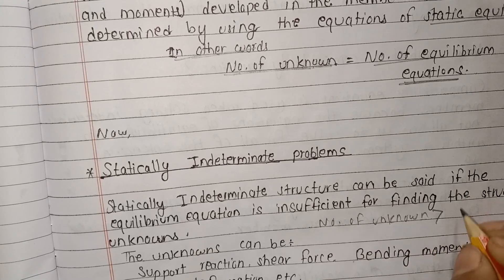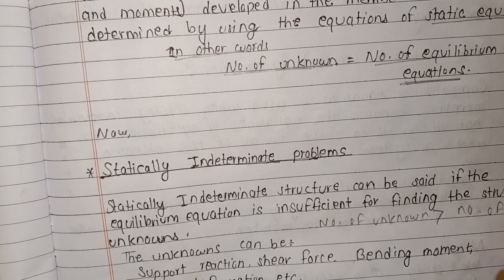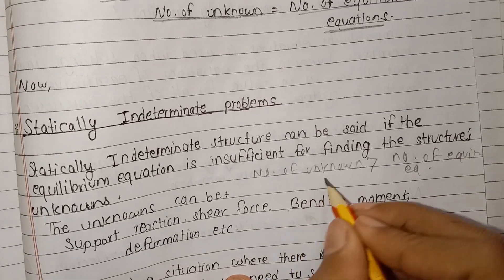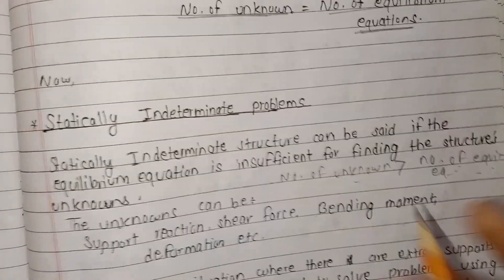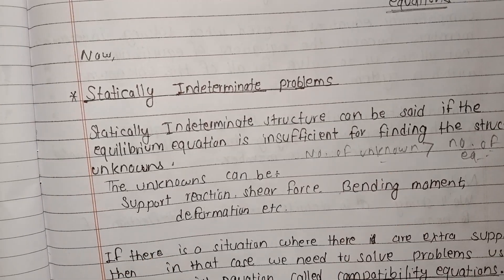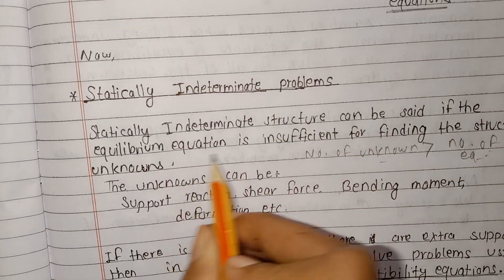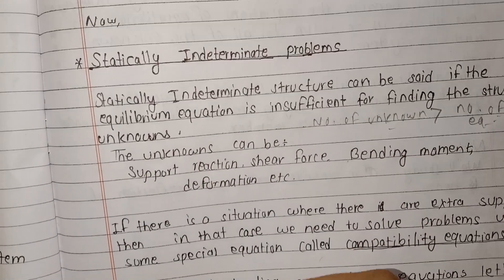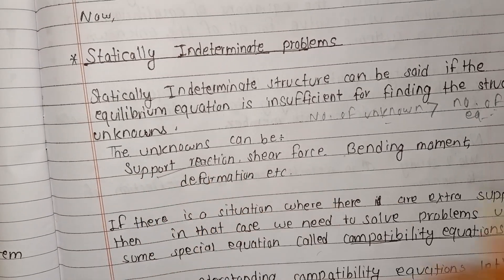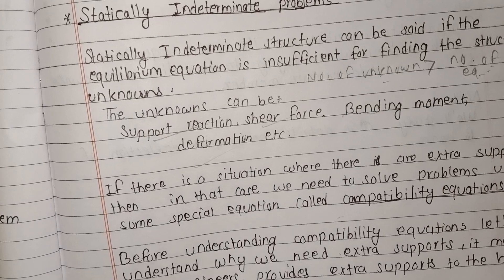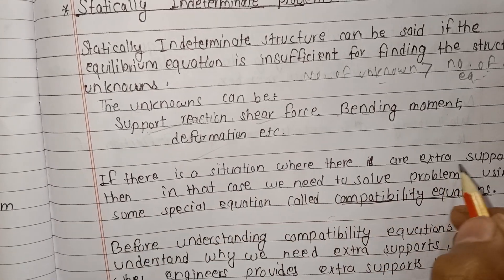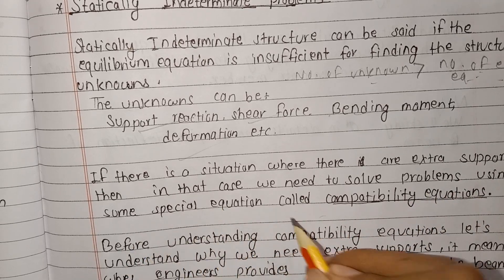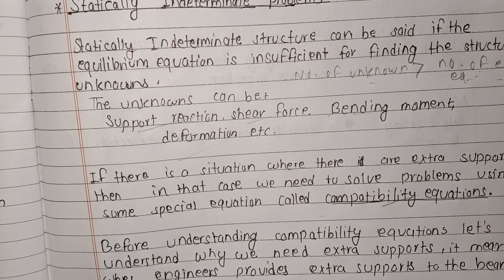A statically indeterminate structure can be defined as one where the number of unknowns is greater than the number of equilibrium equations. The unknowns can be support reactions, internal forces, bending moments, or deformations. If there is an extra support, we need to solve the problem using special equations called compatibility equations.